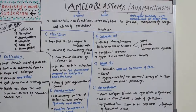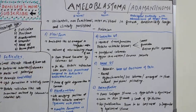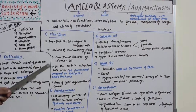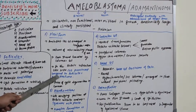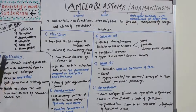Plexiform type: ameloblast-like cells arranged in irregular masses and a network of interconnecting strands, each strand bounded by columnar cells. The stellate reticulum-like tissue is less prominent compared to the follicular type, and areas of cystic degeneration are also common.